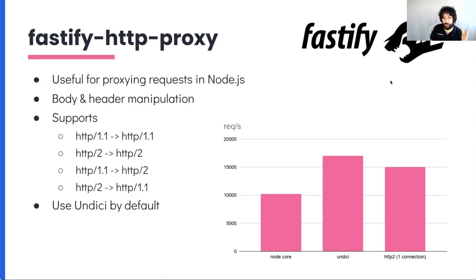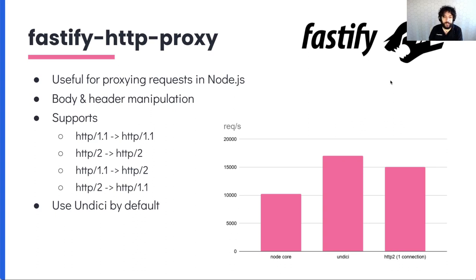I've also done some benchmarks on HTTP2 using a library called Fastify HTTP Proxy — a simple HTTP proxy system built on top of Node.js and Fastify that can do HTTP 1 to HTTP 1, HTTP 2 to HTTP 2, but also HTTP 2 to HTTP 1.1 and vice versa. It also uses undici by default for HTTP 1.1, which is great. It's fast, actually, and I'm pretty happy about it. I know this can be improved quite a lot, potentially, because it's using one single connection and we might be hitting some HTTP 2 limits.